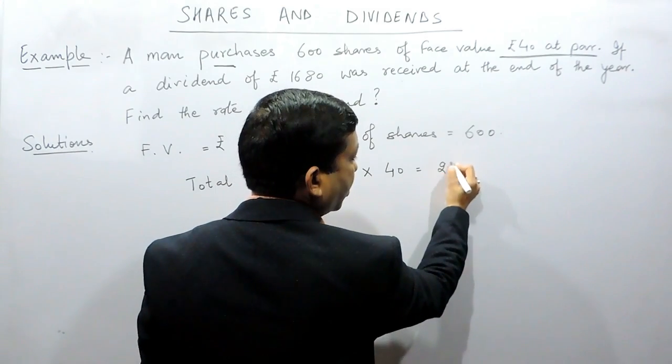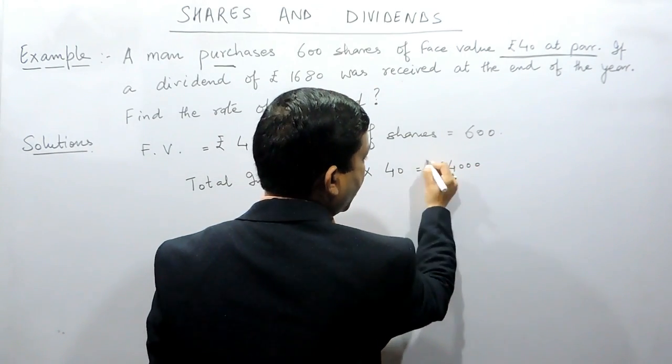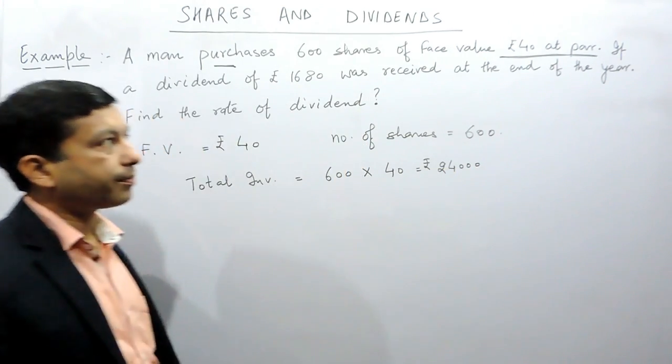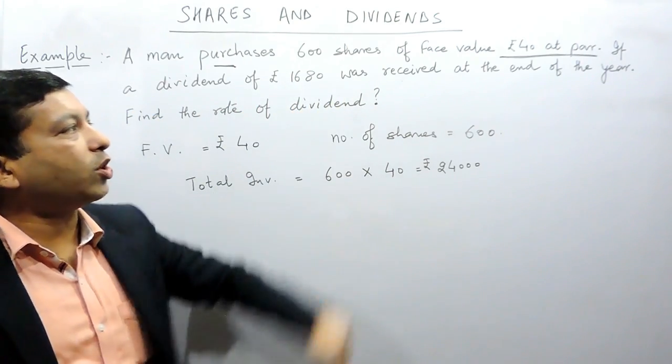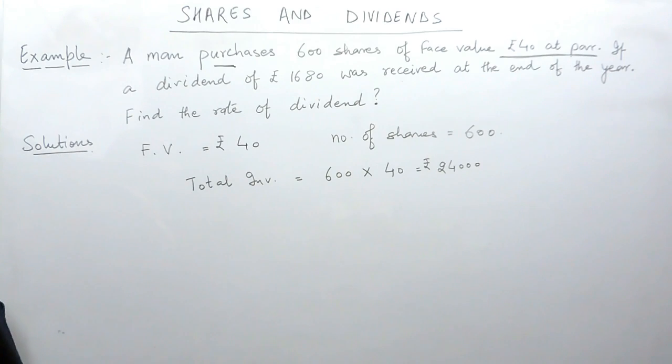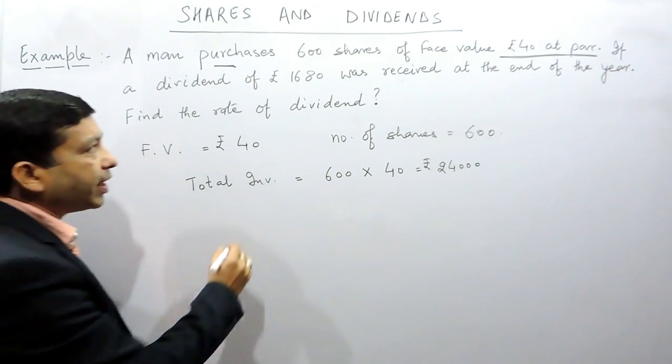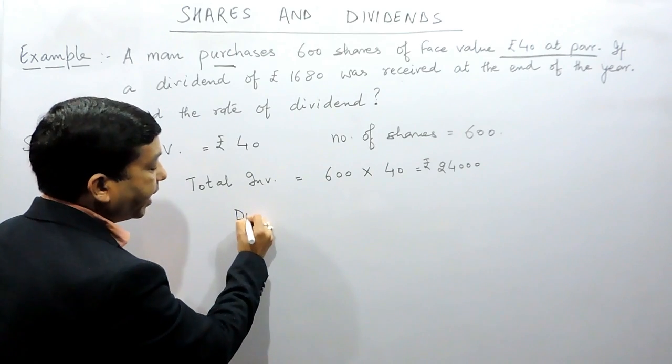Now if a dividend of 1680 was received at the end of the year, it means that at the end of the year the total dividend a man is getting is rupees 1680.